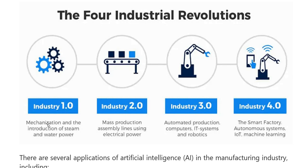Industry 1.0 mein mechanism aur introduction of steam and water power tha. Second mein production assembly line hai, use kar rahe hai electrical power, automated production, computers, IT systems, aur robotics. Yeh saari chizay hati hain Industry 3.0 mein.